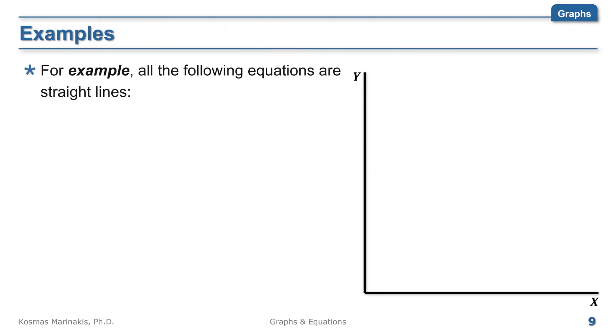Here are some examples of equations that represent straight lines. y equals 10 minus 2 times x. With a positive intercept of 10 and a negative slope of 2, I expect that this line starts from 10 on the vertical axis and keeps decreasing by 2 units for every 1 unit increase in x.